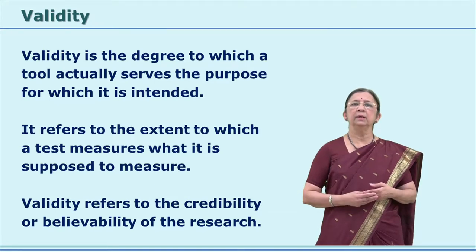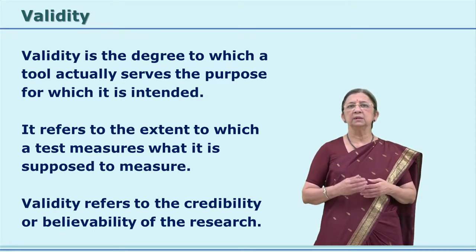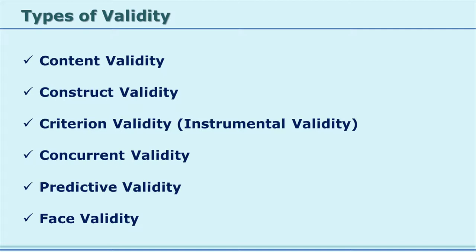Because it is a very important aspect of any tool, the researcher has to pay attention. There are different types of validity: content validity, construct validity, criterion validity or instrumental validity, concurrent validity, predictive validity, and face validity. Let us see each type of validity in detail.